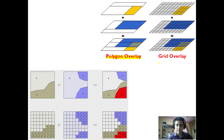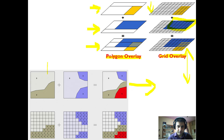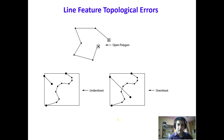Now comparing vector and raster polygon overlay: for raster, the input and intersect images are overlaid to produce a pixelated output. For vector, the input and overlay files are combined to produce a vector output. Both raster and vector formats can be used to perform polygon overlay, though their visual representations differ.